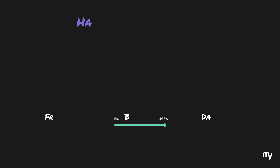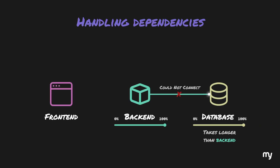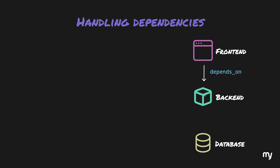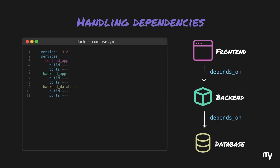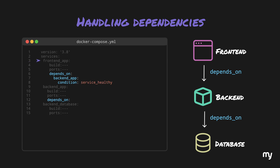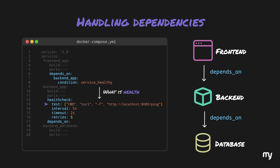There are some things that could go wrong with this setup. If the database takes longer than the backend to initialize, the backend could fail to start. Similarly, if the backend takes longer than the frontend, calls from the frontend would fail. Frontend depends on backend, and backend depends on the database. We can specify these dependencies in the Docker Compose file with the depends_on field, setting a condition that the service should be healthy, and defining a health check that sends a request to the /ping endpoint, retrying every five seconds.